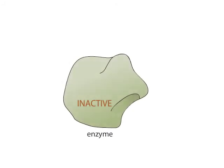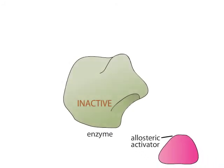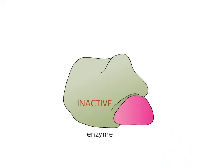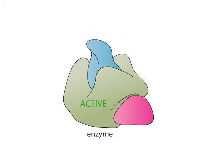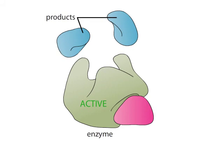Allosteric regulators can be inhibitors or activators. Activators also bind to allosteric sites non-covalently. The binding essentially opens up the active site, making it more accessible to the substrate, increasing the affinity between the two.